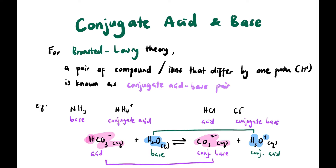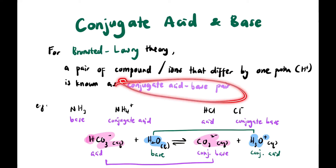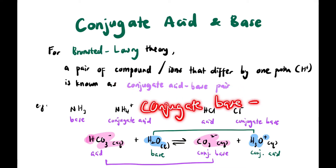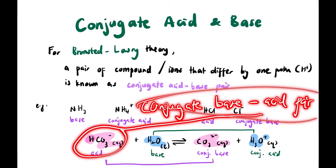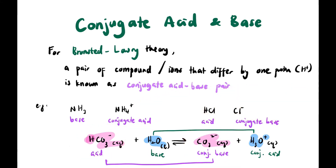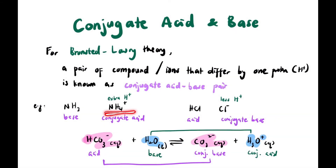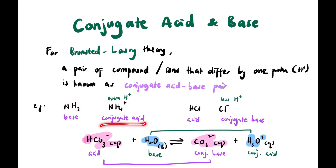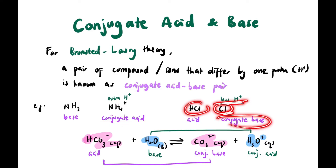These pairs are called conjugate acid-base pairs or conjugate base-acid pairs. To emphasize: between a base and its conjugate acid, there is one extra H⁺. Between an acid and its conjugate base, the conjugate base has one fewer H⁺ than the acid.